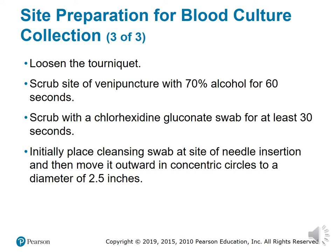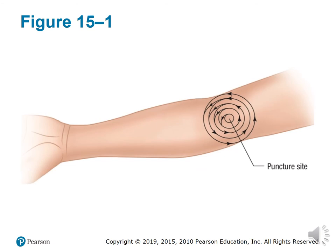Loosen the tourniquet. Scrub the venipuncture site with 70% isopropanol for 60 seconds, then scrub with chlorhexidine swab for 30 seconds. Begin at the site of needle insertion and move outward in concentric circles to a diameter of two and a half inches to remove dirt, debris, and dead skin.